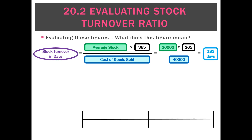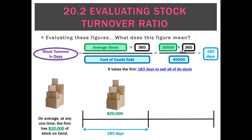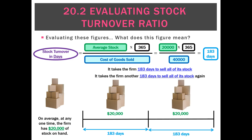What did that mean? Well the same thing to begin with — it means that on average we have $20,000 of inventory at any one time. But what's easy to interpret with this one is we can say on average it takes us 183 days to sell all of that stock. So when we have another $20,000 average stock it would take us another 183 days to turn it over or sell it.